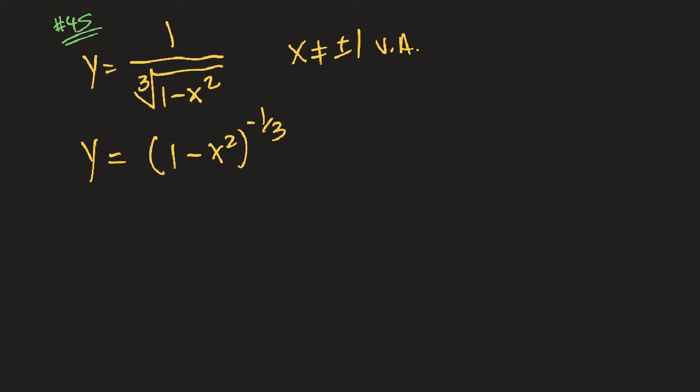Once you write it in that form, the derivative is a little bit easier to compute. We'll have to follow our chain rule, but we end up with y prime equals negative 1 third times 1 minus x squared. We're going to subtract 1, so that's negative 4 thirds. And then following the chain rule, I have to multiply by negative 2x because that's the derivative of the u stuff in parentheses.